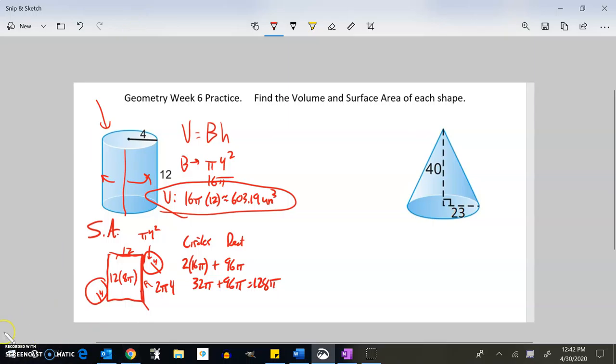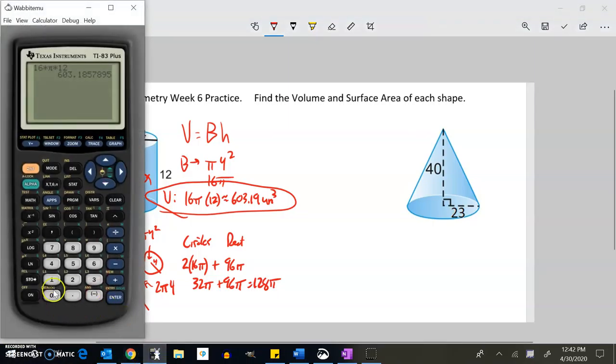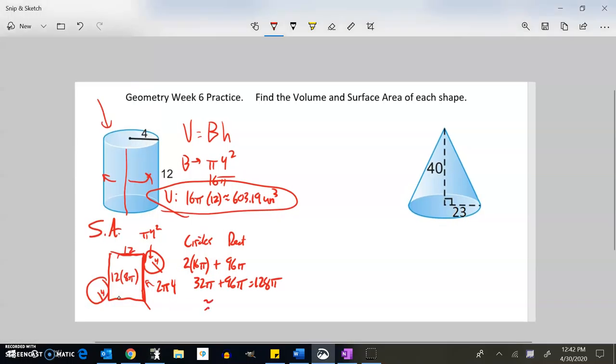I can get an approximation for that on my calculator: 128 times π, and that is about 402.12. That would be units squared because it's a surface area measurement—how many squares cover the area.